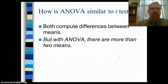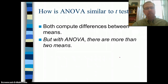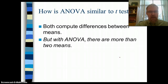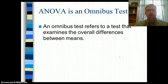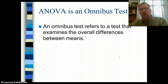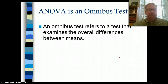How is analysis of variance similar to the t-test? Both compute differences between means — that's conceptually the same. But with ANOVA, there are more than two means. We just talked about how there have to be more than two groups, so it's three or more groups.